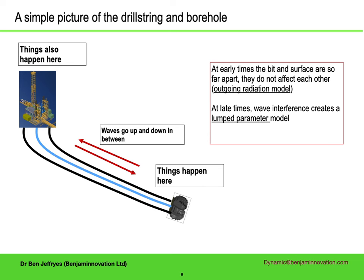Over sufficiently long timescales — at least as long as the two-way time, preferably a multiple of it — the whole system between the bit and the surface can be modelled by a few average parameters, known as lumped parameters. As we shall see, this works well for studying axial and fluid dynamics. If you want to study what happens at timescales that are neither short nor long, then there is no alternative but to use some kind of detailed numerical model, because it's complicated.